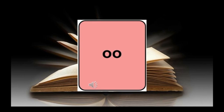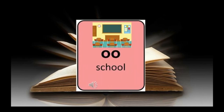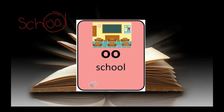Our next sound is OO. OO, school, OO. This OO is very close to that OO sound. I'm going to write school, circle that OO, and mark this as being a double vowel sound — it goes along with the other three we were talking about.